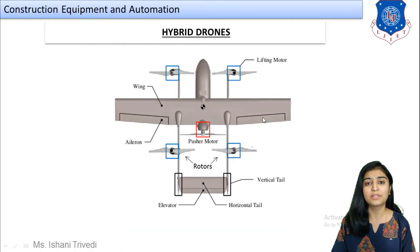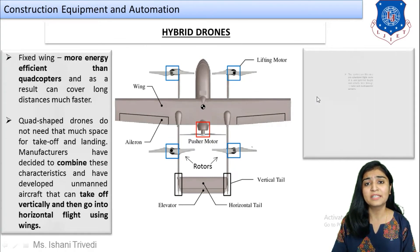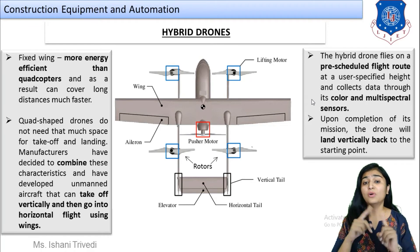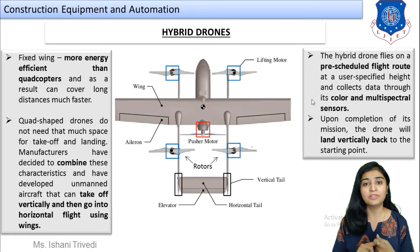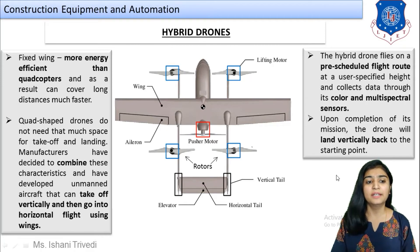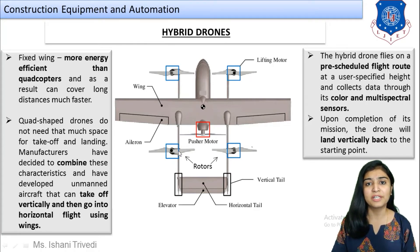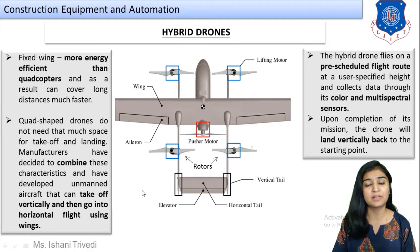Next, let us talk about hybrid drones. There are drawbacks in both rotor drones and fixed wing drones — so what if you combine these two to overcome all the disadvantages? This is the idea manufacturers have worked on. The fixed wing hybrid drone is more energy efficient than quadcopters and as a result can cover long distances. Looking at the sketch, it looks like an aircraft with fixed wings, but vertical rotor blades are also mounted on it, giving the advantage of both.